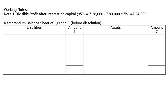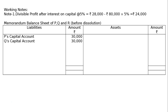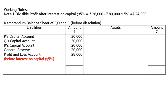Memorandum balance sheet of P, Q and R before dissolution. Liabilities and assets are shown with the rupee symbol. The capital accounts of partners total Rs. 80,000 in their profit sharing ratio of 3 to 3 to 2 — P's capital Rs. 30,000, Q's capital Rs. 30,000, R's capital Rs. 20,000. General reserve is Rs. 20,000 directly given. Profit and loss account before interest on capital at 5% is Rs. 28,000.